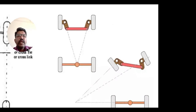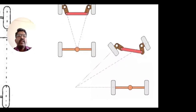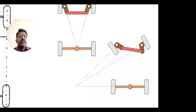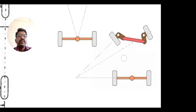When a vehicle is moving in a straight manner, there will not be any changes or deviation in the track arm linkage, so the vehicle will move along a straight axis. But when a vehicle is turning — either a left turn or right turn — there is a change in the track arm linkages.